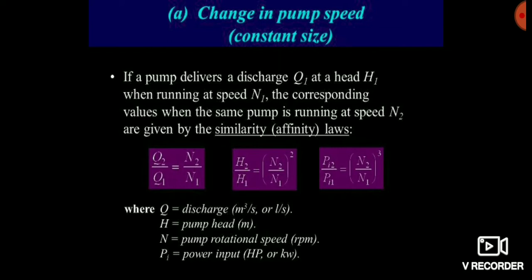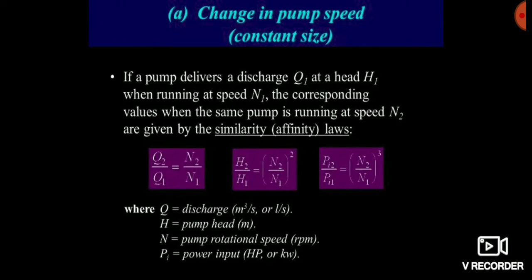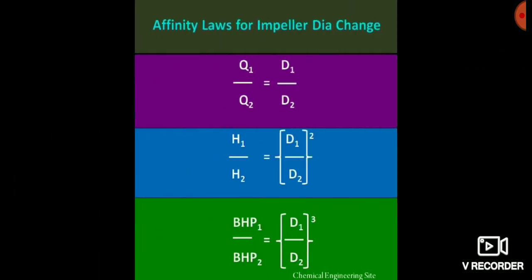You can see and easily understand these terms. There is another set of relationships, this time in terms of the diameter of the pump. The first one: Q1 by Q2 is equal to D1 by D2 — a direct linear relationship, same as the previous speed relationship.